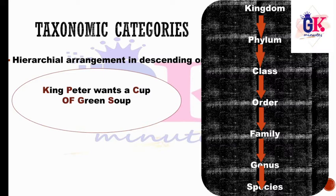The category in descending order is called the taxonomic hierarchy: Kingdom, Phylum, Class, Order, Family, Genus, Species. A mnemonic to remember this is: 'King Peter Wants a Cup of Green Soup.' We learn the first letter of each word to remember this hierarchy arrangement.